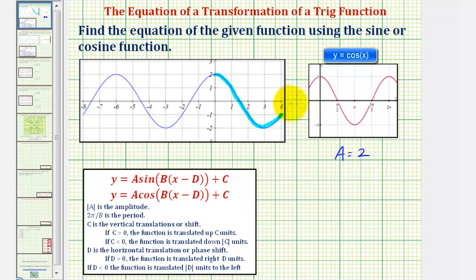Next, we already noticed the midline is the x-axis, which means there's no vertical shift, and therefore c is equal to zero. And because we have a maximum function value at x equals zero, just like the basic cosine function, there's also no horizontal shift, and therefore d would also be equal to zero.